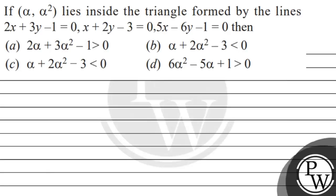Hello, let's see the question. The question says: if alpha comma alpha square lie inside the triangle formed by the lines 2x plus 3y minus 1 is equal to 0, x plus 2y minus 3 is equal to 0, and 5x minus 6y minus 1 is equal to 0.